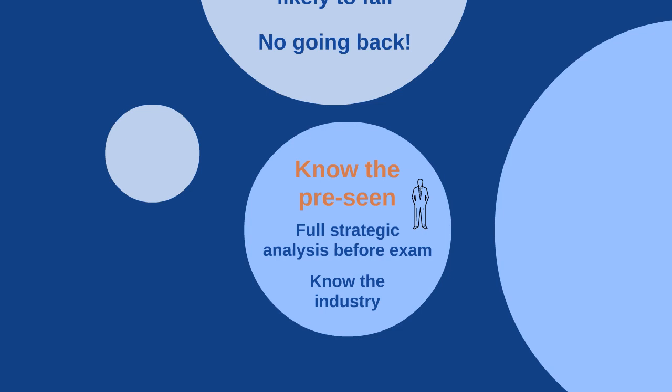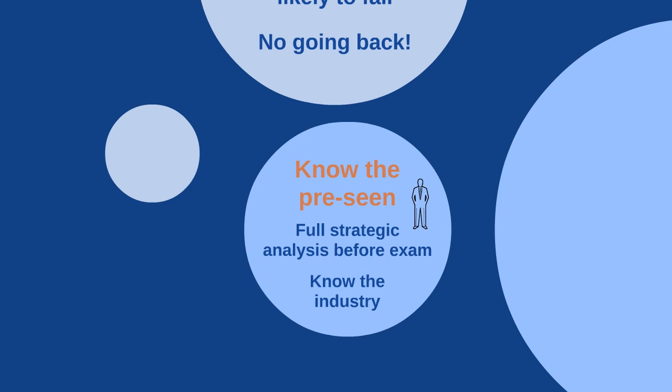For example, if the company specialises in pharmaceuticals, look at the pharmaceutical industry. What issues are actually facing that industry? Do you have any industry information, trends, or trend analysis that supports the points you are making? That will illustrate to the examiner that you have the business acumen, which is what they are looking for in this exam.